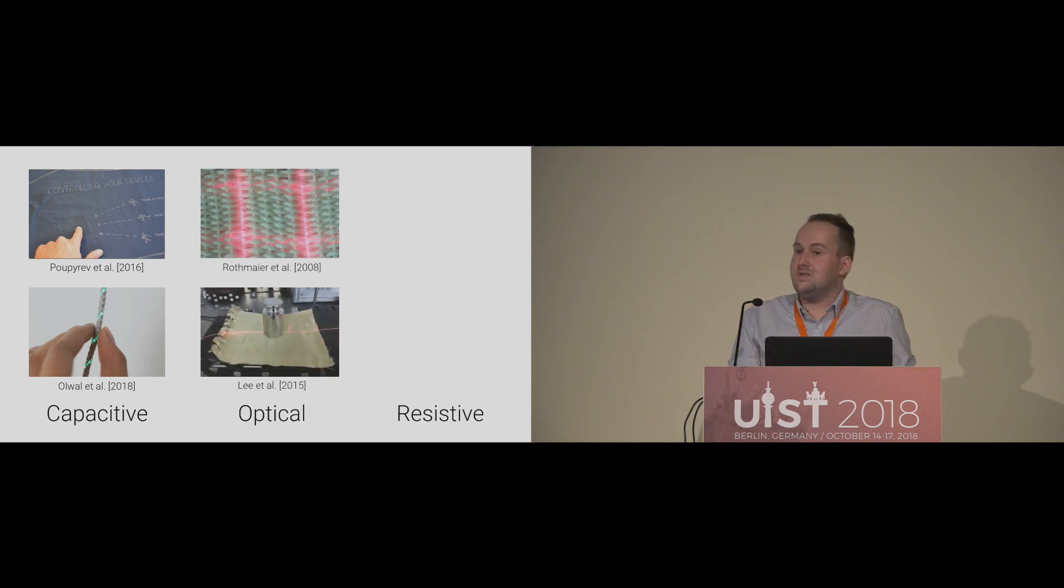Another sensing technique to detect pressure in textiles is to use optical fibers. Rotmeier and others presented a method using flexible thermoplastic silicon fibers woven into a textile. Mechanical stress applied onto these fibers changes the cross section and therefore the transmitted light intensity. This method can be easily achieved from a yarn perspective.